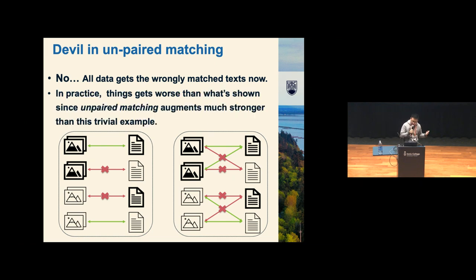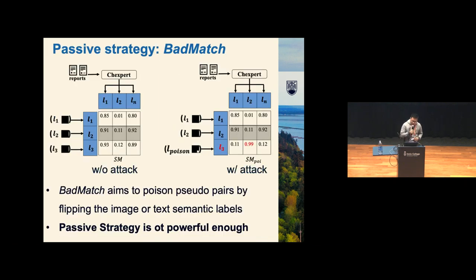In practice, as I just said before, with MedClip, things get worse, since what's shown is just unpaired matching. But in MedClip, let's say in an extreme case, an image can be mapped to all of the sentences that we collected with the reverse semantic label in reality. So it seems very harmful. What's going to happen in MedClip if we have this kind of simple label flipping?